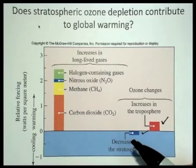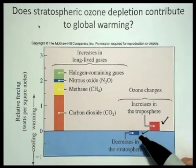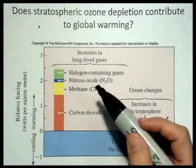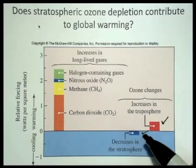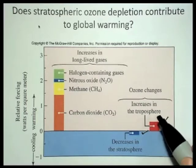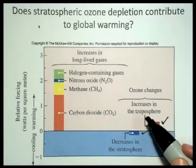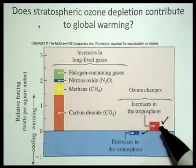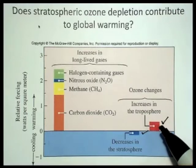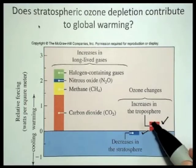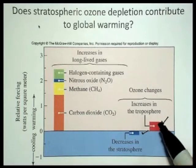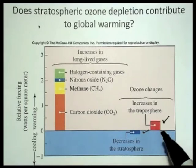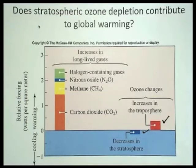A lot of times people get stratospheric and tropospheric ozone issues confused, and then they get the whole ozone business confused with global warming. So, to remind you: the tropospheric ozone is due to pollution, mostly car pollution. It's from nitrogen dioxide breaking down in the presence of light and producing free radical oxygen that then combines with oxygen in the troposphere to form ozone. It's called ground-level ozone, and the problem is that ozone is a pollutant that can cause respiratory problems, and it's also a very reactive chemical that can break down plant material and plastics.